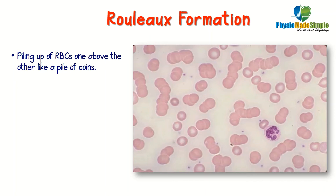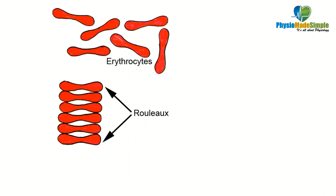A specific property of RBCs is called Rouleaux formation — the piling up of RBCs one above the other like a pile of coins. In the picture, RBCs have piled up one above the other with no chemical reaction occurring between the individual RBCs that have been piled up.